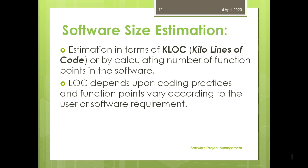Software size estimation: historically, the most common software sizing methodology has been counting the number of lines written in the application source code — estimation in terms of kilo lines of code — or by calculating the number of functional points in the software. LOC depends upon coding practices, and functional points vary according to the user or software requirement.